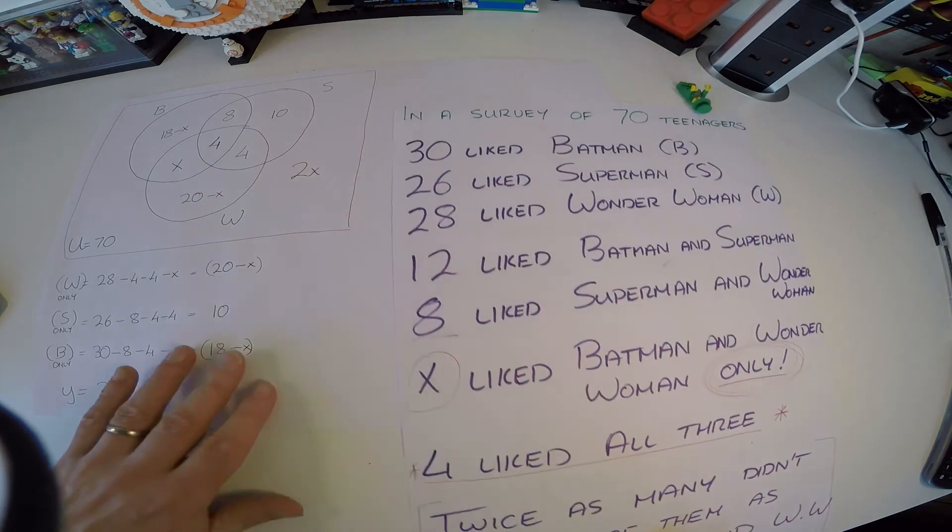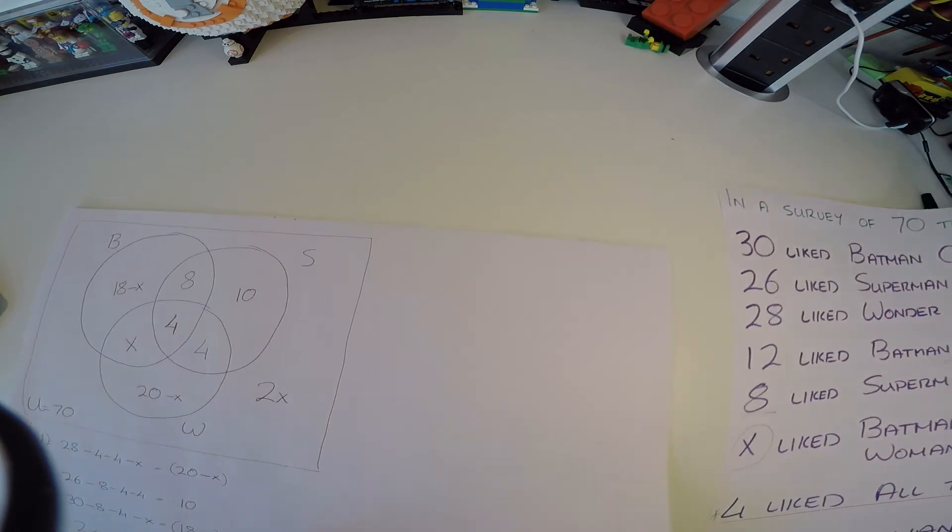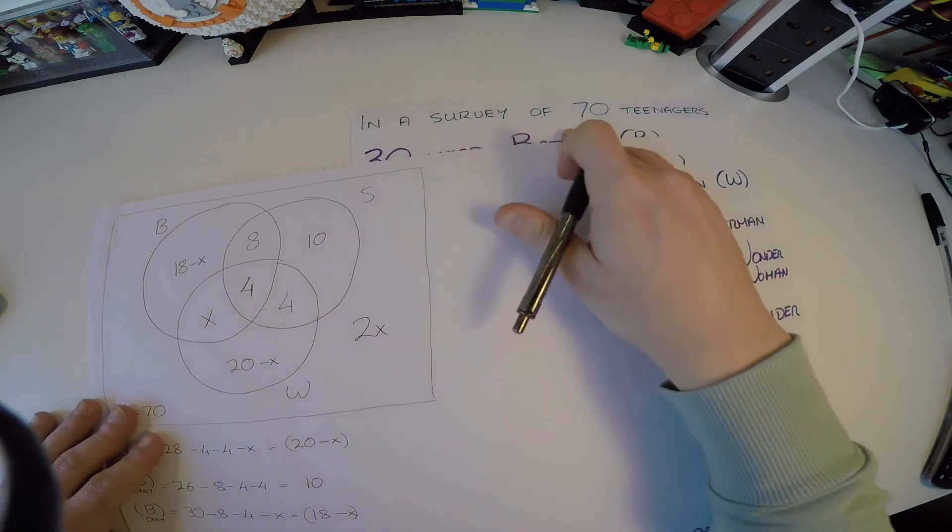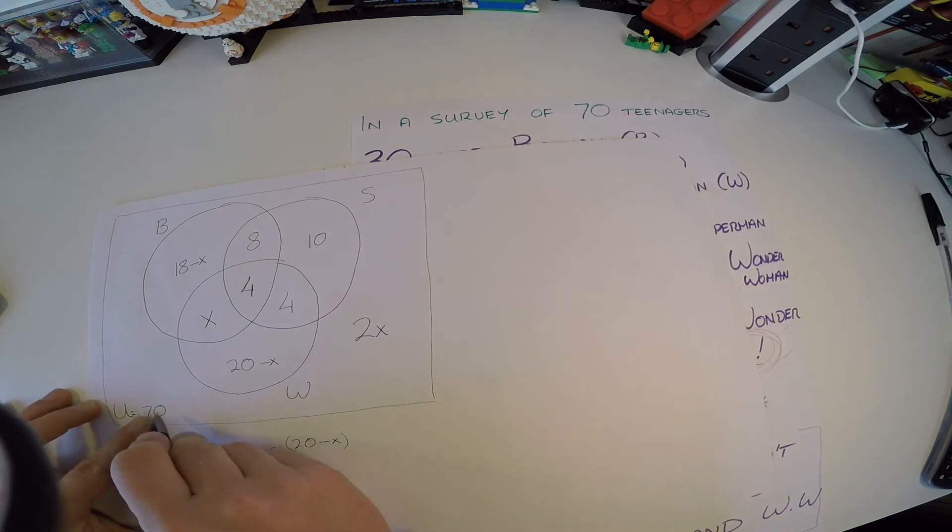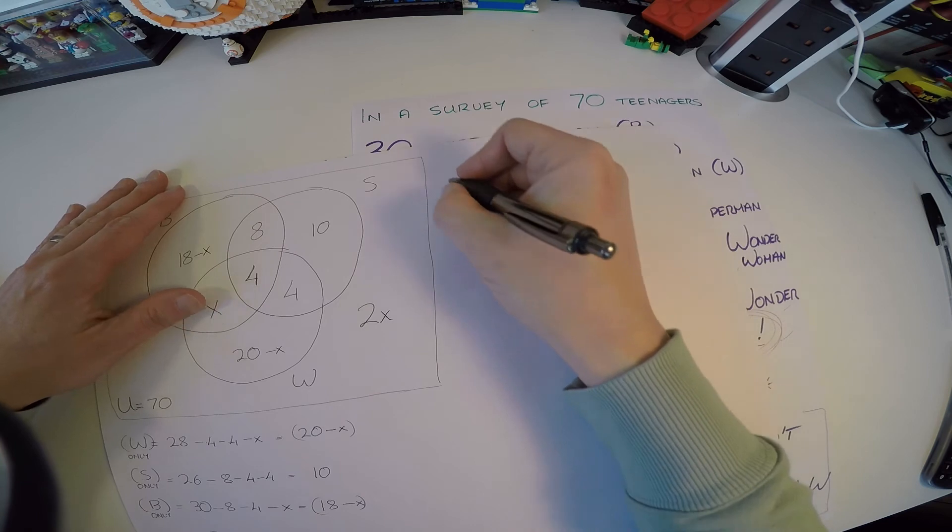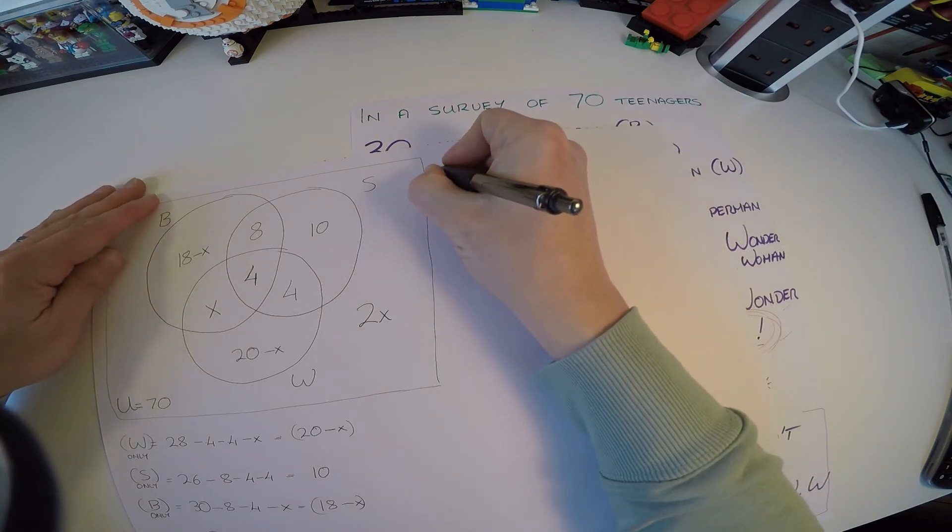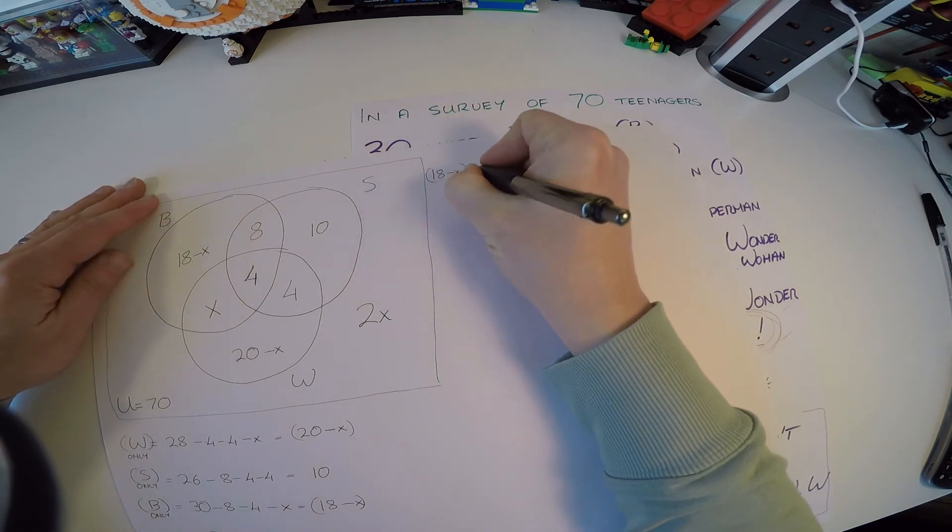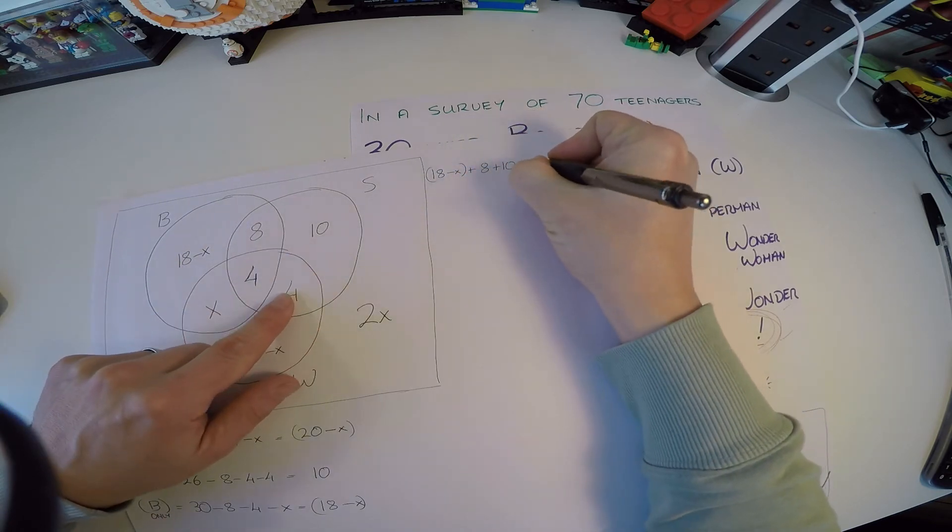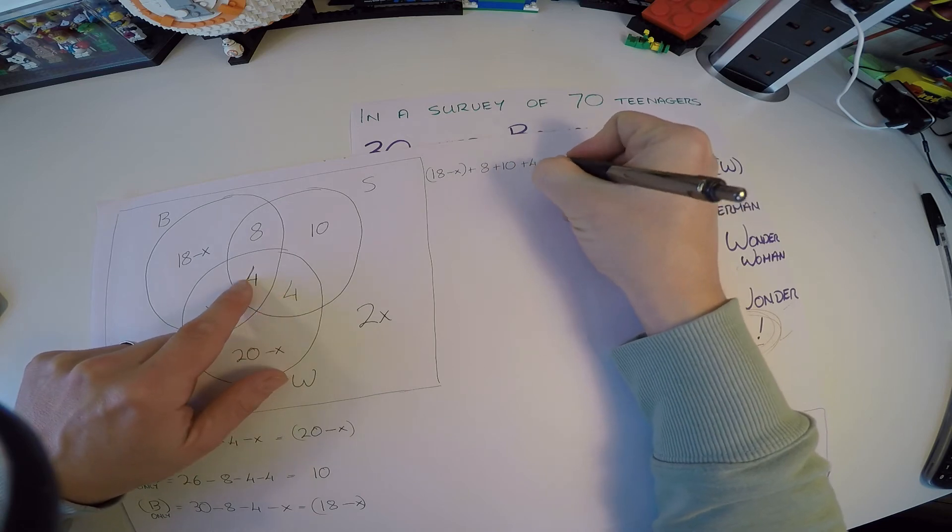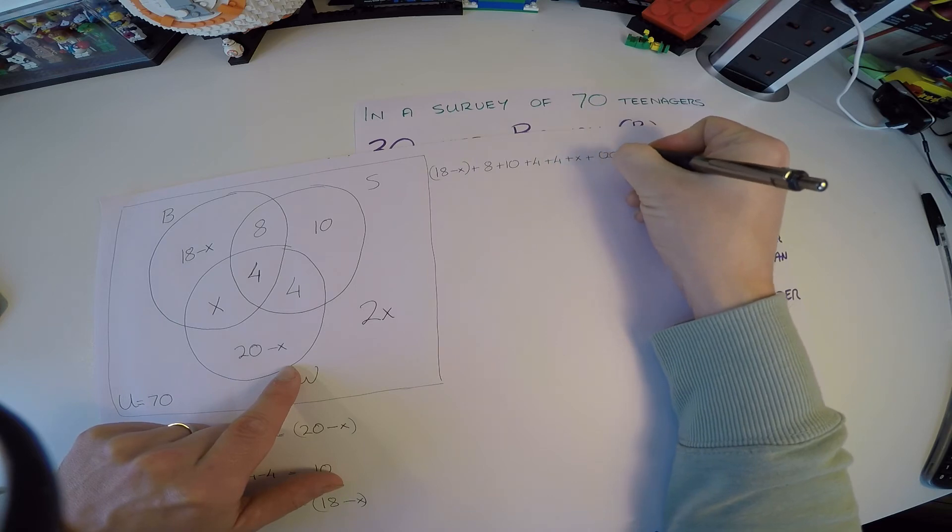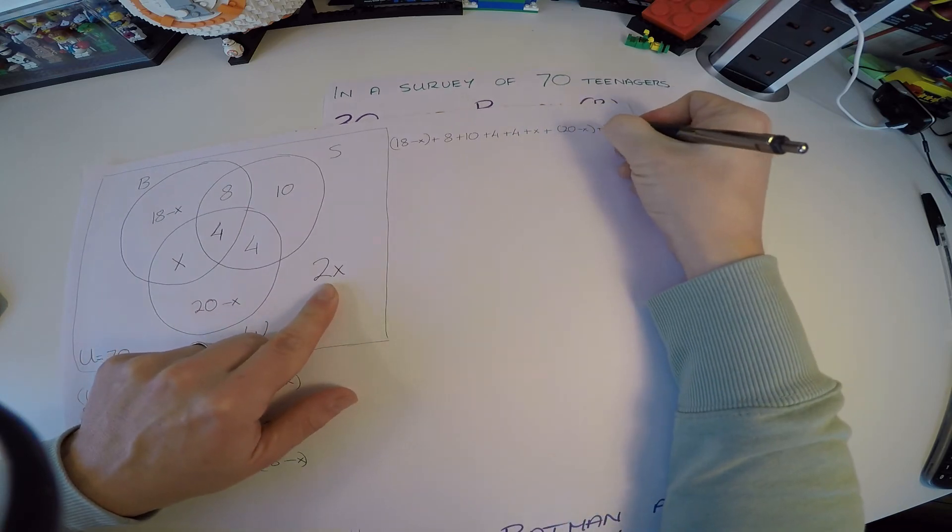So if that's 2x and we have everything here, can we solve now this for x? Well, we can, because it said the survey was of 70 teenagers. So we actually know all these individual numbers here should all make up 70. So if I was to make out an equation, my equation would look like this: 18 minus x plus 8 plus 10 plus 4 plus another 4 plus another x plus a 20 minus x plus this 2x out here, that should all equal to 70.